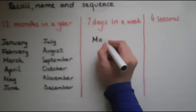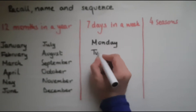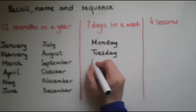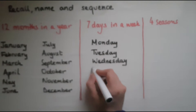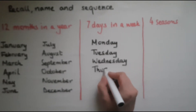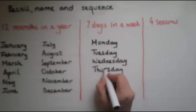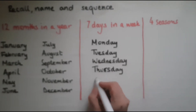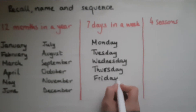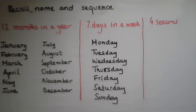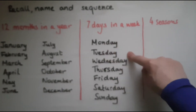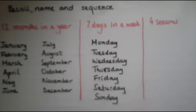So Monday, then comes Tuesday, and the third one is Wednesday. Thursday. Friday. Saturday and Sunday. So all of them have 'day' at the end. And first we start with Monday, Tuesday, Wednesday, Thursday, Friday, Saturday and Sunday.